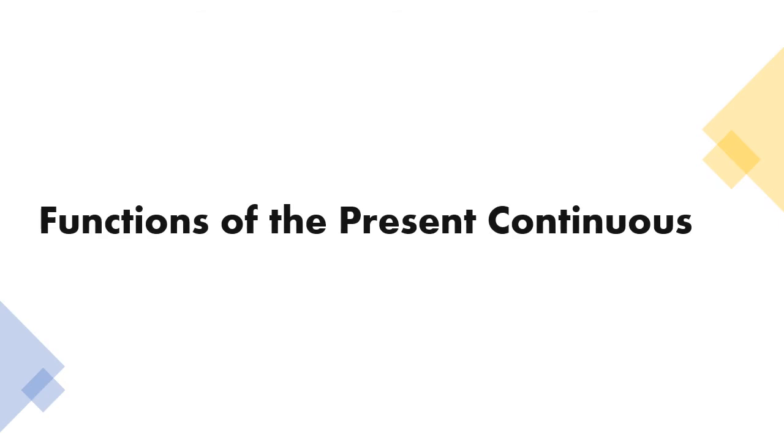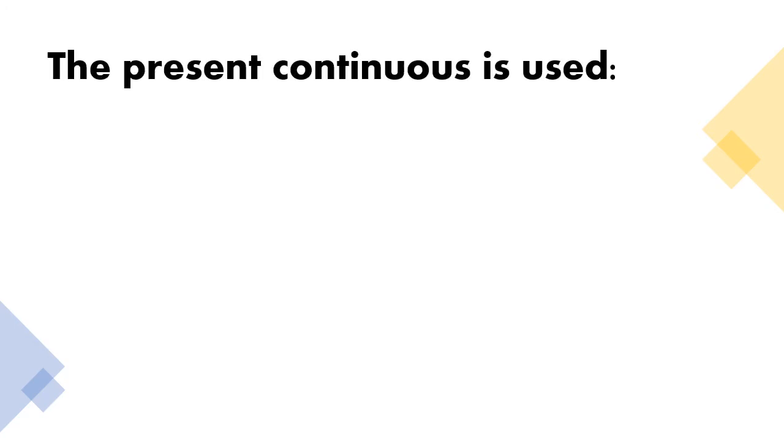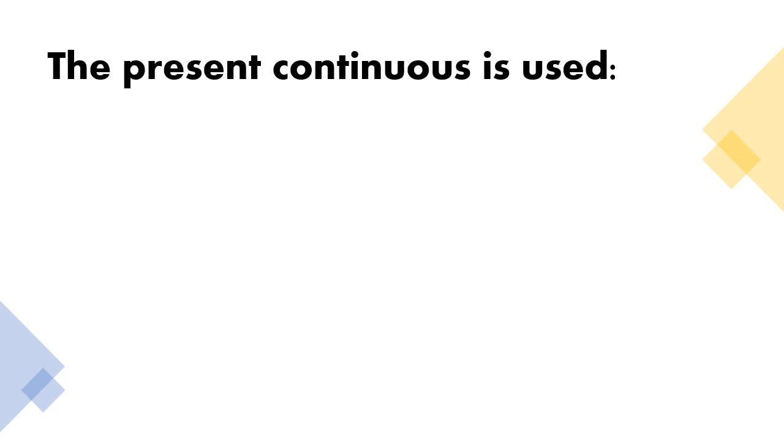Now, here are the functions of present continuous. Present continuous is used to describe an action that is going on at this moment. For example, you are using the internet. You are studying English grammar. So, you are using or you are studying is an action that is going on at this moment.